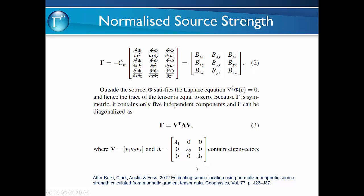The eigenvectors can be derived from that — lambda 1, lambda 2 and lambda 3. For more detail you can see Becky and Clark's paper. The important thing is we have curvature information in the tensor field, and this tensor can be derived using FFT filter processing of a total magnetic intensity grid. Those filters are all available inside Model Vision.